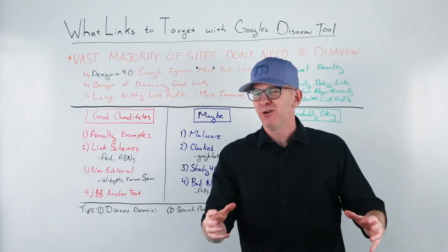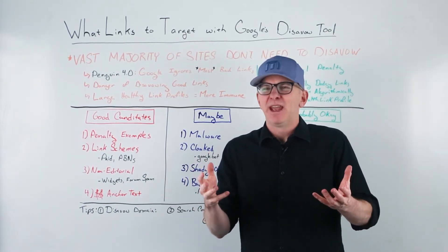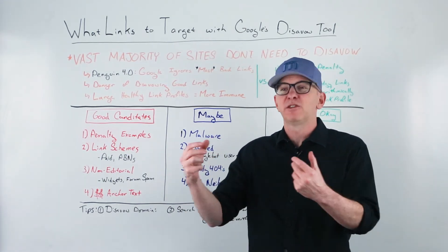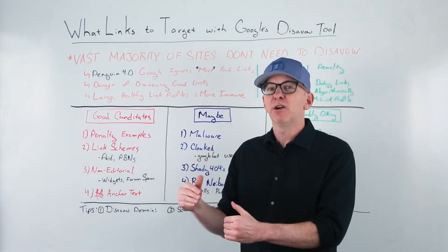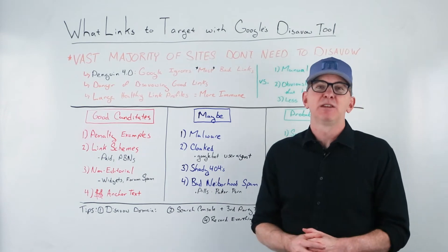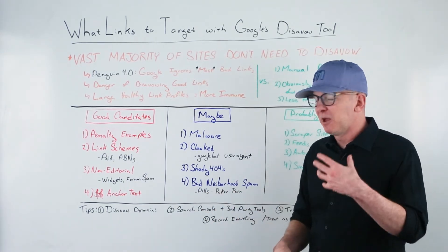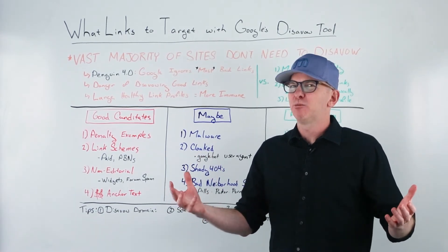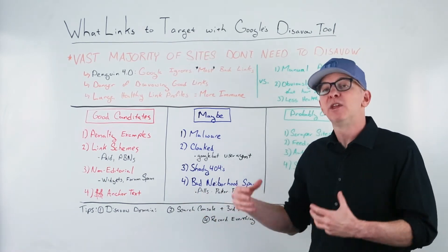Shady 404s: you click on the link and the page or even the whole domain isn't there. I throw these in the disavow file because there's usually no record of what the link was — it was likely some sort of spammy link, and then the domain was removed or dropped by the domain registrar. Since I don't know what was there, I usually disavow it. Finally, bad neighborhood links: things like pills, poker, porn — the three P's of bad neighborhoods. If I was Google and I saw porn linking to my non-porn site, I'd consider that pretty shady, so I might throw those in the disavow file as well.